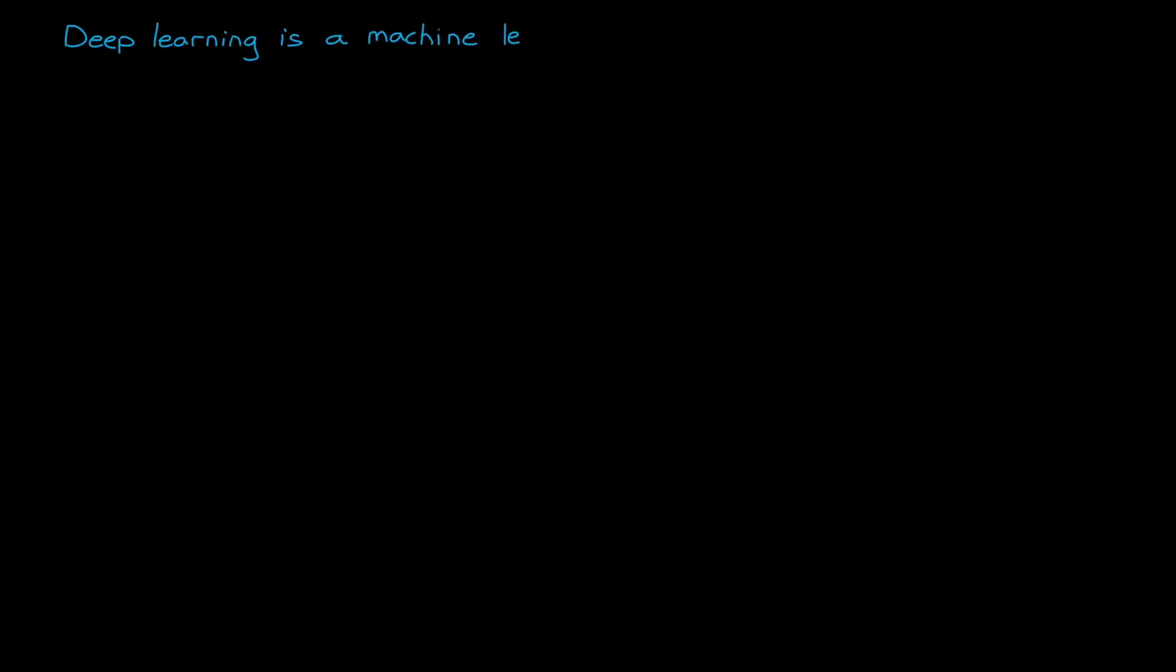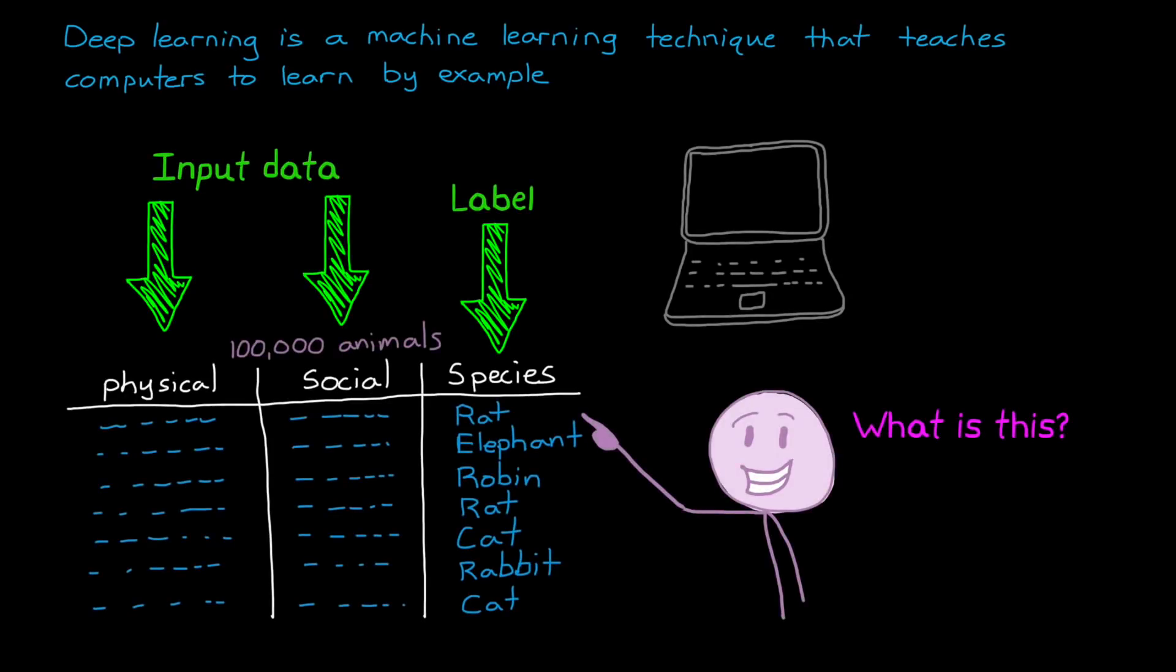At a really high level, deep learning is a machine learning technique that teaches computers to learn by example. Specifically, we're teaching a computer how to perform some classification task by exposing it to known scenarios.